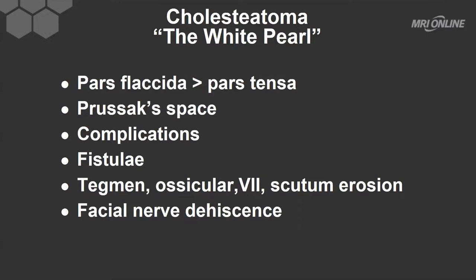From the pars flaccida ingrowth, the cholesteatoma will show soft tissue opacification in Prusac space. Remember that Prusac space is the space between the scutum and the middle ear ossicles. Along the way, that scutum may be either blunted or eroded.